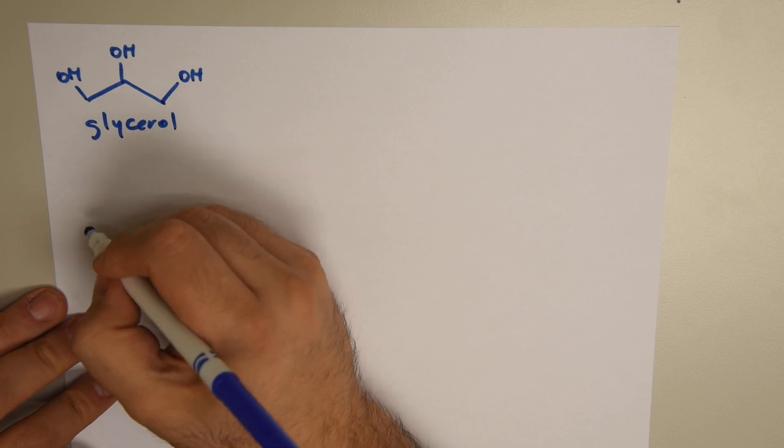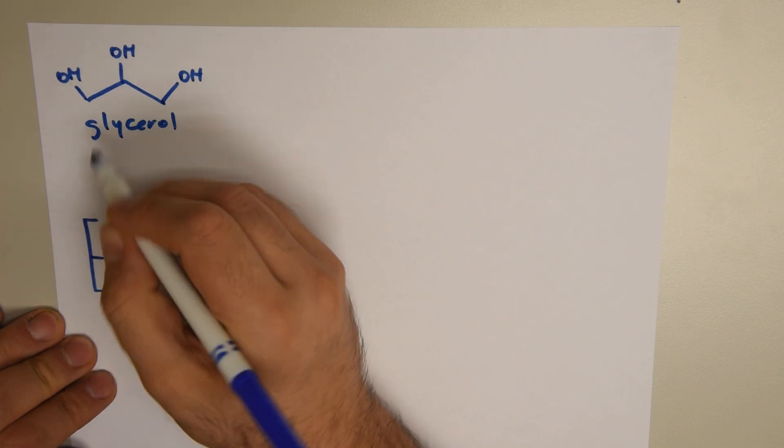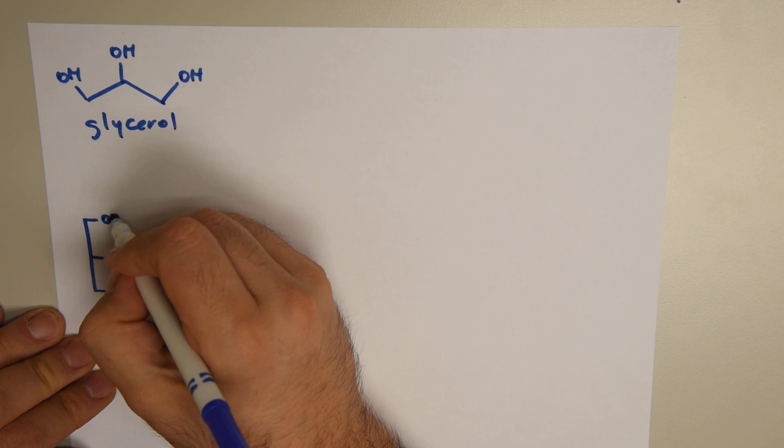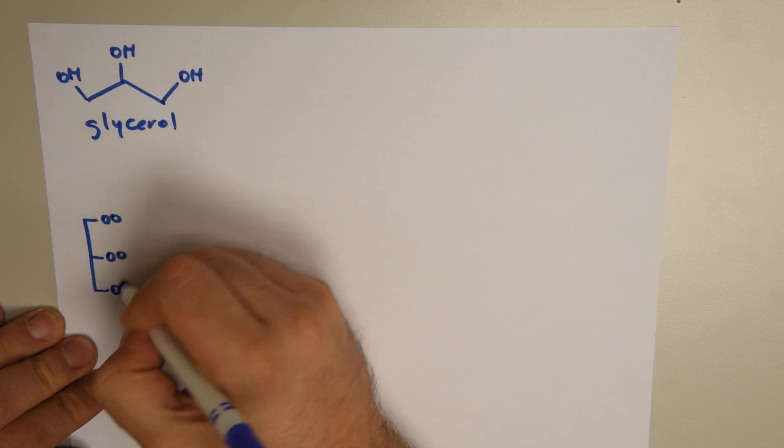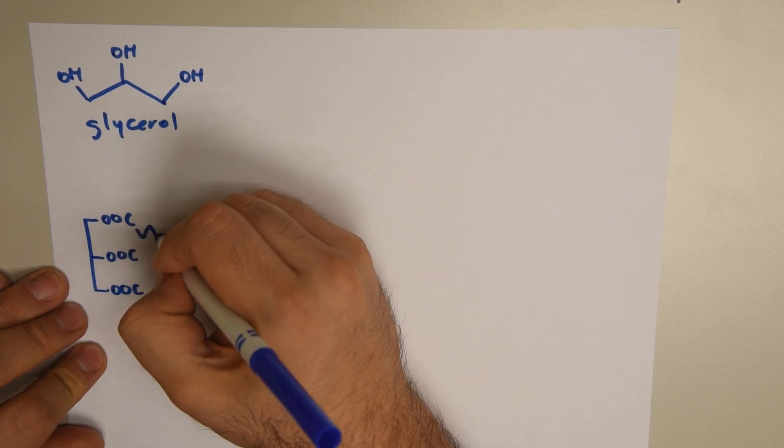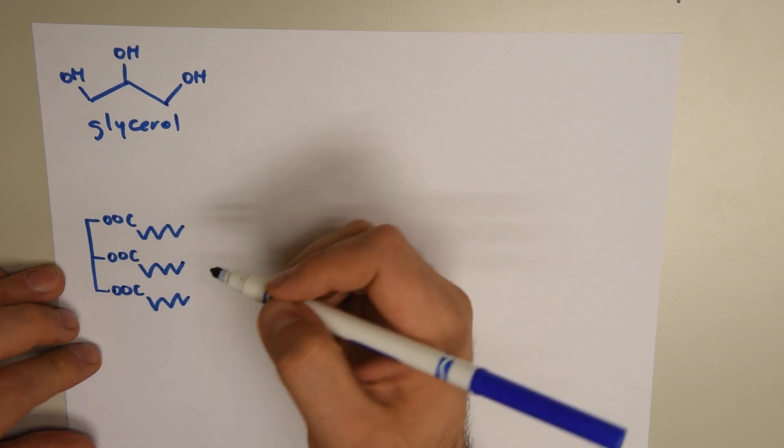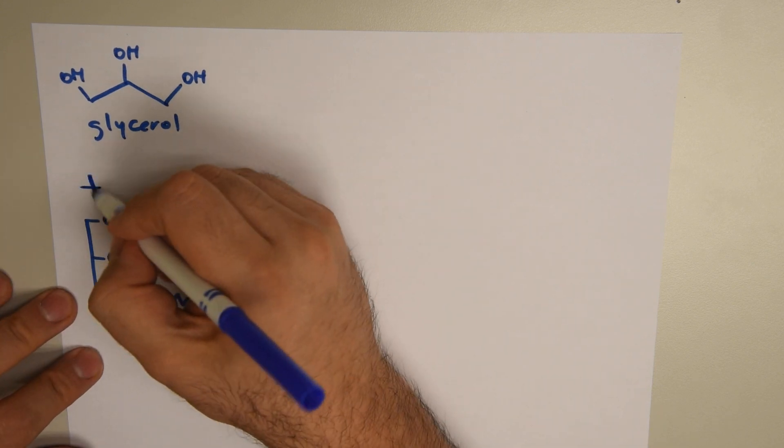So we start with a triglyceride. These are the same three carbons: O, O, O, O, O, O, C, which is my ester group. And then we have our fatty acids that are attached right here. So we have a triglyceride.